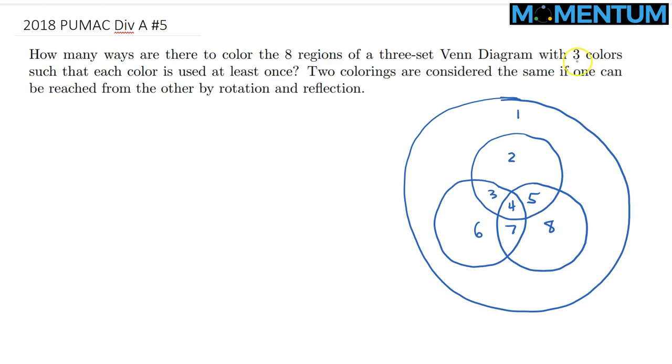Then what we want is to color these eight regions using three colors in such a way that we want to make sure that each color is used at least once. And at the same time, we are aware of the fact that rotations and reflections, if you can obtain a coloring by another coloring, by simply taking a rotation or a reflection, then those two are supposed to be counted as one. So, we are just basically asking for essentially different colorings, up to rotations and reflections.